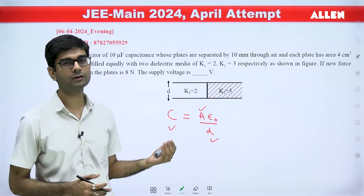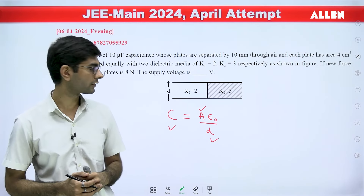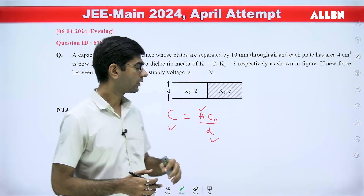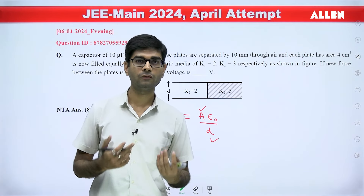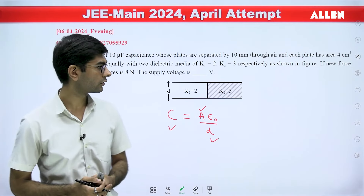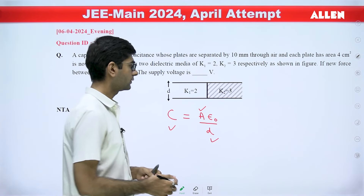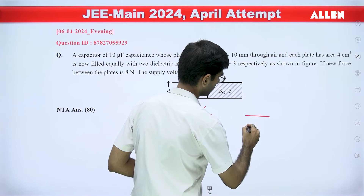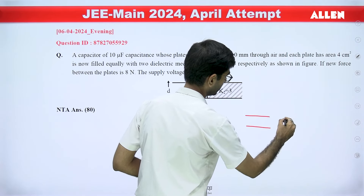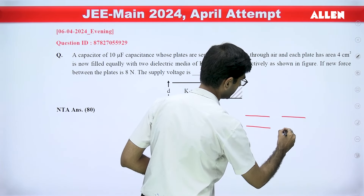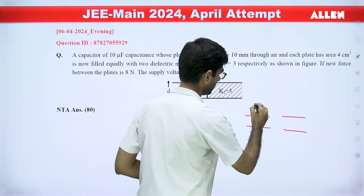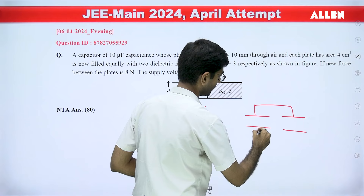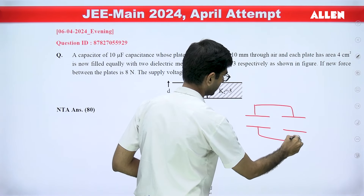So the data given in this question is inconsistent. If we had to find the force, the question was really simple because here the two dielectrics form two capacitors which we can consider to be in parallel.